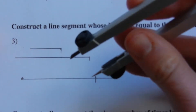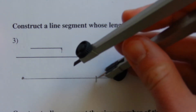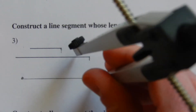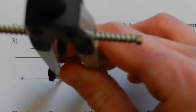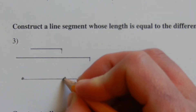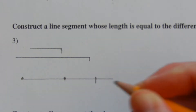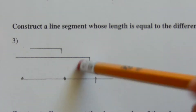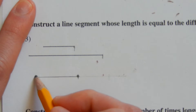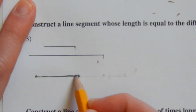Now I take the measurement of the first line — since we're taking the difference, we're subtracting. I place it on the new endpoint I just created and go backwards along the line, taking away that amount. My new endpoint occurs between that previous point and my original point. I erase the extended portion, and what remains is the line segment equal to the difference.